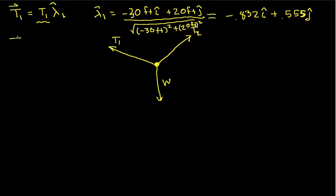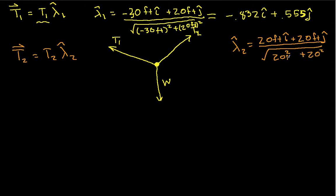Similarly, T2 is its magnitude times a unit vector in the direction of T2. And so lambda hat 2, this goes over 20 feet and up 20 feet. So it's going to be 20 feet i plus 20 feet j over the square root of 20 squared plus 20 squared. And this turns out to be 0.707 i-hat plus 0.707 j-hat.